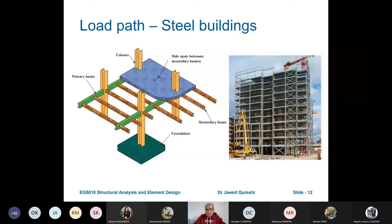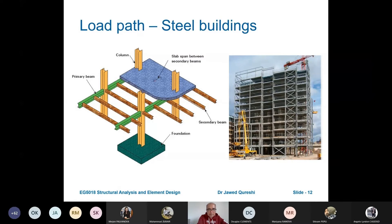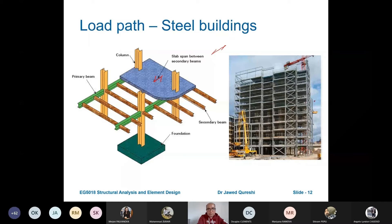Here you can see a steel building on your right, and you can see the slab between secondary beams. It is very important to understand that the slab has a spanning direction, shown by an arrow pointing in one direction only. This means that load is being distributed in that direction only — not in the other direction. This means it is a one-way slab.